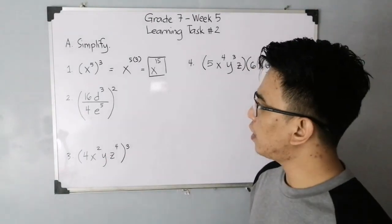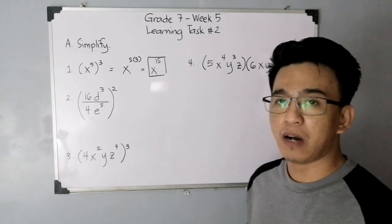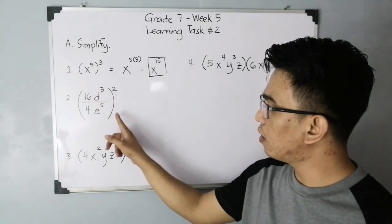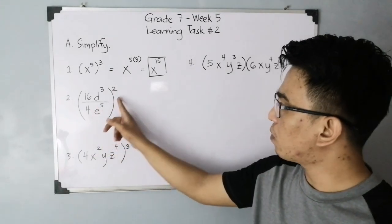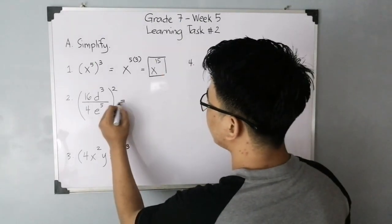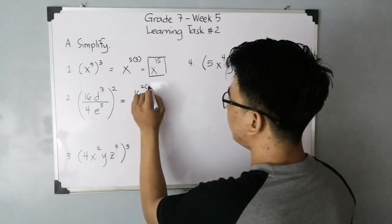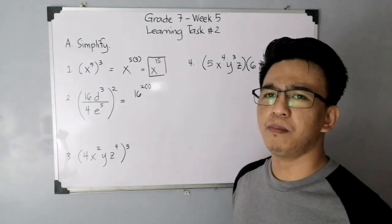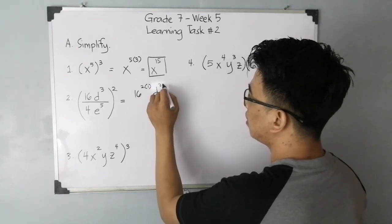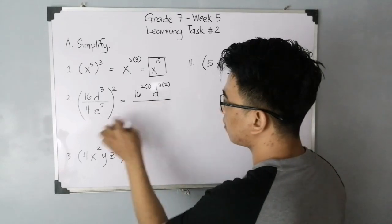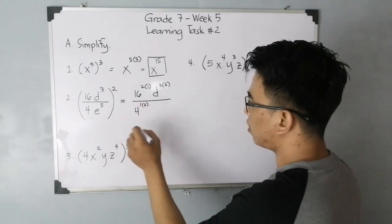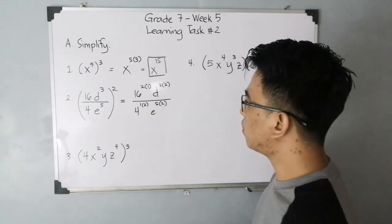In item number 2, some references call the law we'll use here power of power, but think of it as just the power rule. You have the quantity of 16 d raised to 3 over 4 e raised to 5, where you have a squared on the outside that you need to simplify or multiply to the inside. You have 16 raised to 2 times 1, you need to multiply the exponent 1 by 2. The original exponent is 1. For the variable d, you have d raised to 3 times 2.